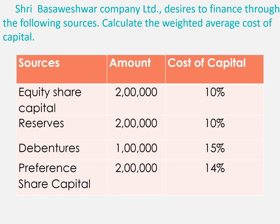Equity share capital: they want to collect 2 lakh rupees at 10%. Reserves: 2 lakh rupees at 10%. By issuing debentures, they want to collect 1 lakh rupees, the cost of which is 15%. The last one is preference share capital: they want to collect 2 lakh rupees, and the cost of that preference share capital is 14%.